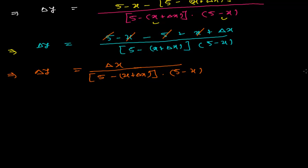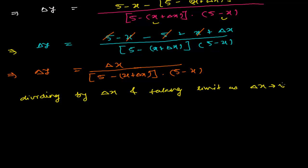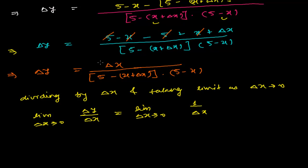Now it is time to divide by delta x and take the limit as delta x tends to 0. So I write: limit as delta x tends to 0 of delta y over delta x equals limit as delta x tends to 0 of delta x divided by (5 minus x plus delta x)(5 minus x), with 1 over delta x applied.